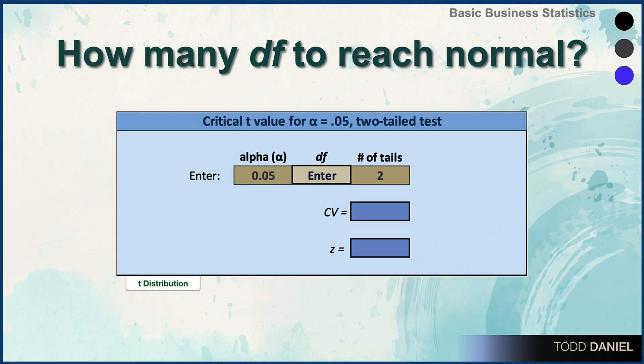For the degrees of freedom, let's start by entering a value of 10. We can see that, compared to the z of 1.96, this critical value is 2.228, which is quite far away.